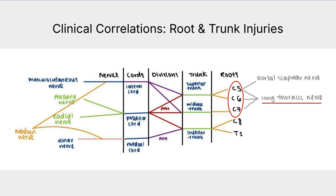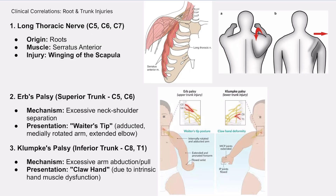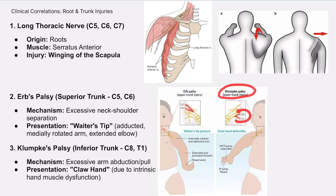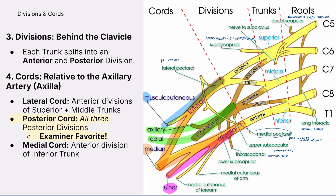The long thoracic nerve of Bell arises from roots C5, 6, and 7. Damage to the long thoracic nerve results in winging of the scapula. Erb's palsy is a high-yield superior trunk injury presenting as the waiter's tip position, and Klumpke's palsy is an inferior trunk injury that gives the distinctive claw-hand deformity. Examiners can ask you on these.